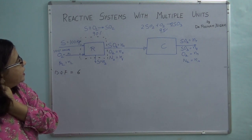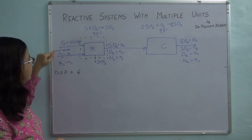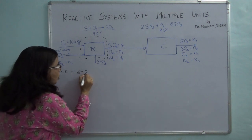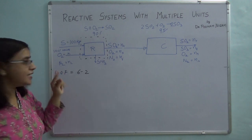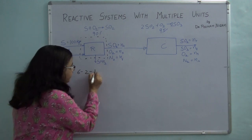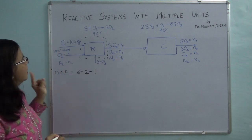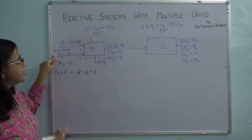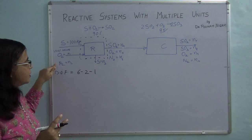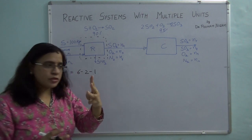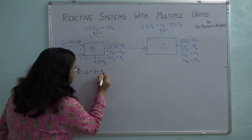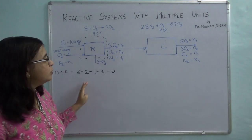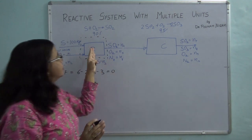How many independent atomic species balances can I take? I have sulfur and oxygen — so 2 atomic species balances. I have 1 inert balance. And I have 3 process specifications: 90% conversion, 100% excess oxygen, and the nitrogen-to-oxygen ratio. So 6 minus 2 minus 1 minus 3 equals 0. My degree of freedom is 0, so let's start solving on the reactor.